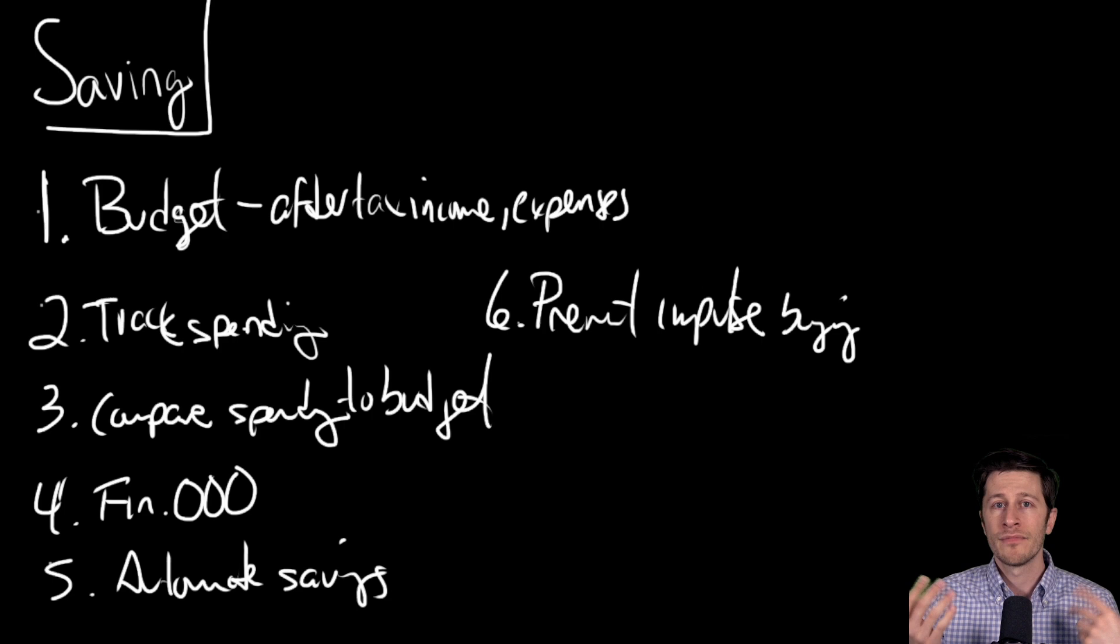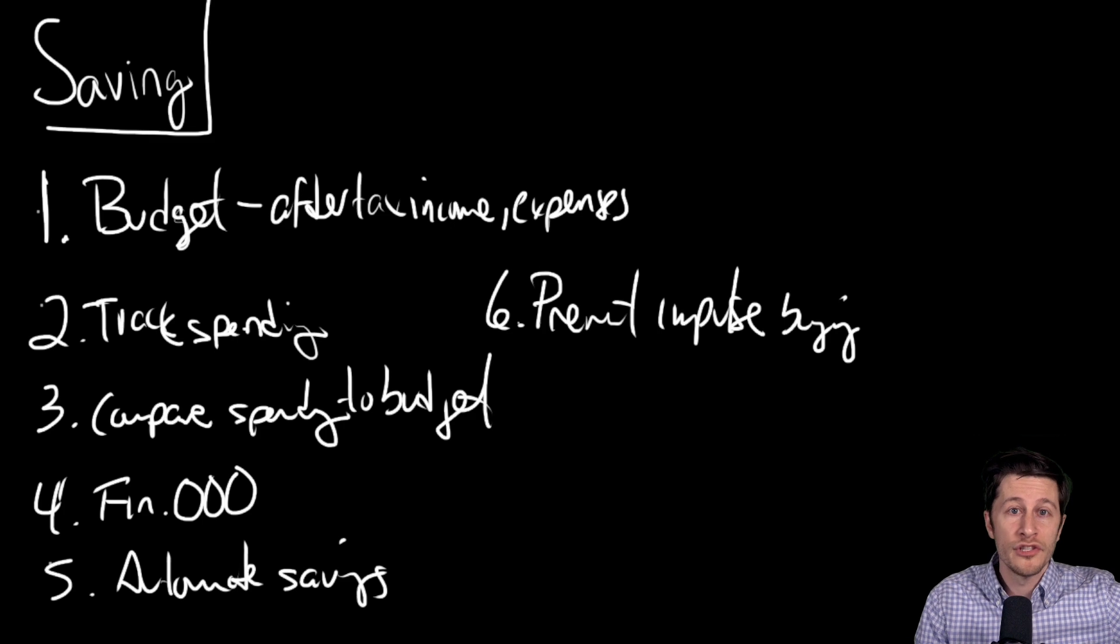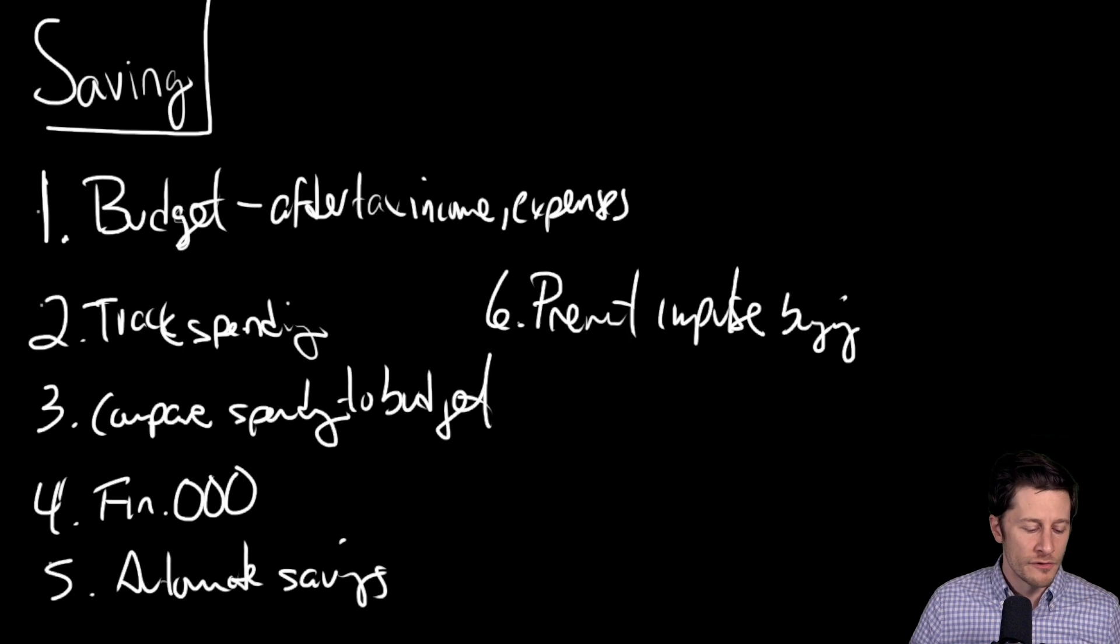Also, you can take other measures. You can not save any payment methods on Amazon. So that way, if you want to buy something, you can't just click that credit card - you actually have to type in the full credit card every time. Don't carry anything with which you could buy. Carry 25 bucks with you when you go out in cash in case you need food or fuel, but otherwise don't carry any credit cards.